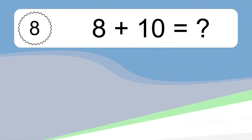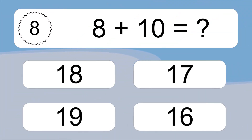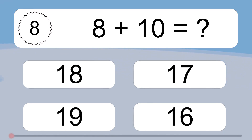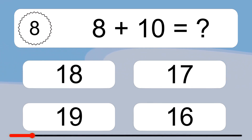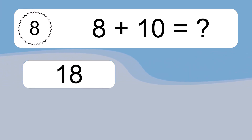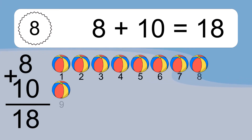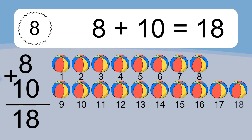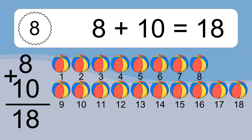8 plus 10 equals what? 8 plus 10 equals 18. Let's count it: 1, 2, 3, 4, 5, 6, 7, 8, 9, 10, 11, 12, 13, 14, 15, 16, 17, 18.